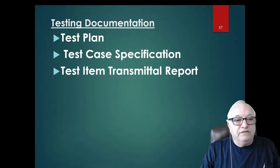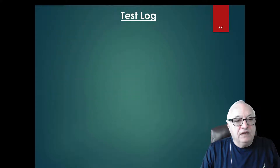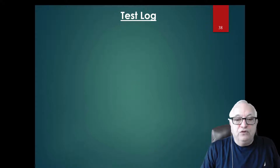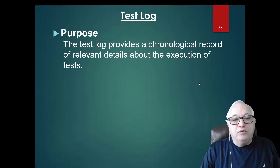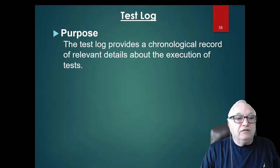We've talked about the test plan, test case specification, and test transmittal report. Now the test log is where you document everything you do in your testing. You come to your lab, open a document or a web page, and there you have a header with all information about what you are testing, then you document all items one by one as you test, keeping a chronological record of relevant details about the execution of your tests.